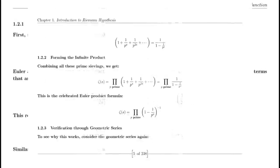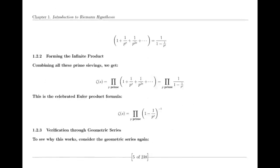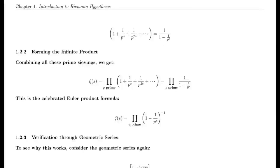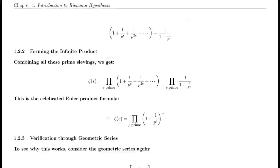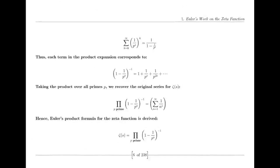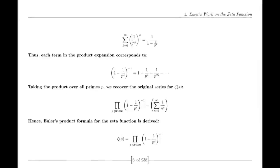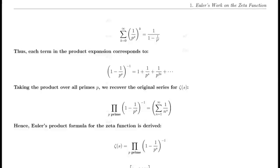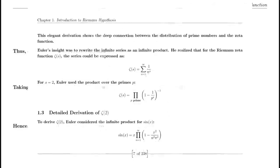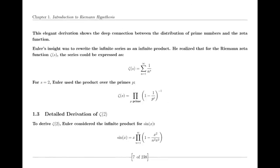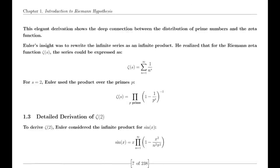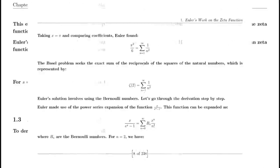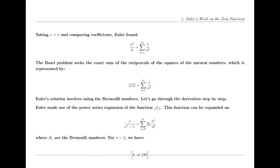Jacobi Theta Function. Riemann also made use of the Jacobi Theta function, which has significant applications in various areas of mathematics. The Theta function's series representation and modular properties were instrumental in Riemann's derivation of the functional equation for the zeta function. This equation is crucial for understanding the zeta function's behavior across the complex plane and highlights its intricate connections to other mathematical functions.